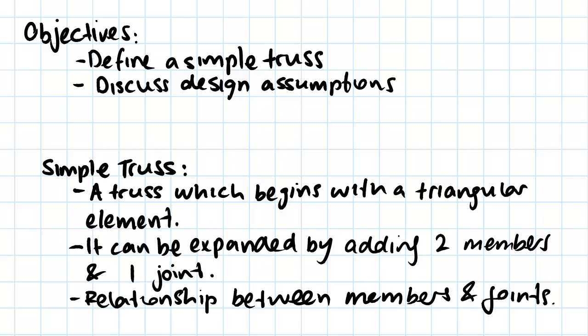So we'll start off by looking at what a simple truss is. We've got a fairly simple definition. It's a truss which begins with a triangular element which can be expanded upon by adding two members and one joint.